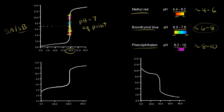Next, let's look at the titration curve for the titration of a weak acid with a strong base. We started with a weak acid — in our example, we used acetic acid — and to the acetic acid we added a strong base, sodium hydroxide. The pH at the equivalence point is greater than seven.